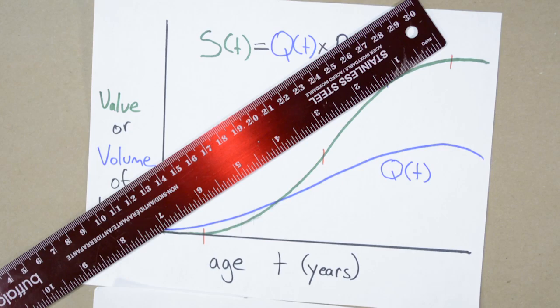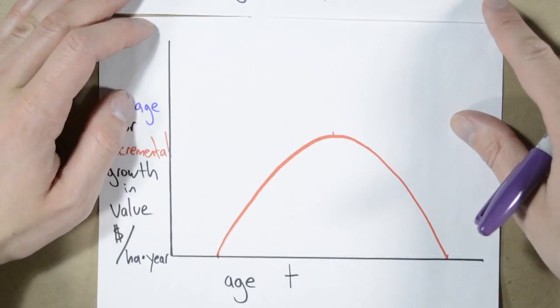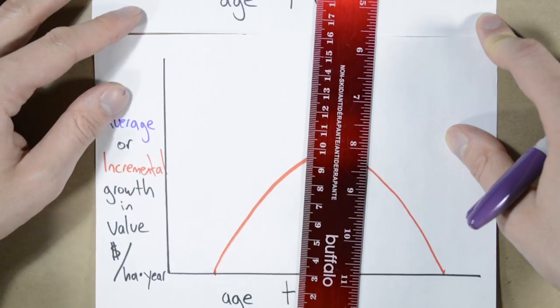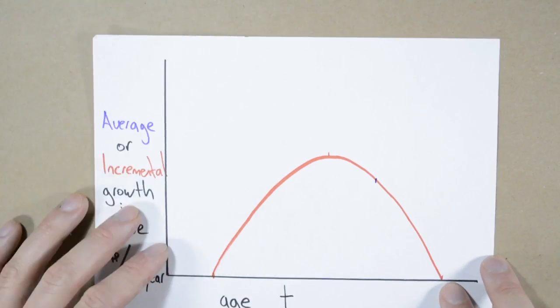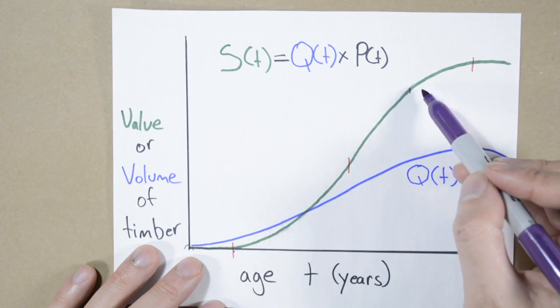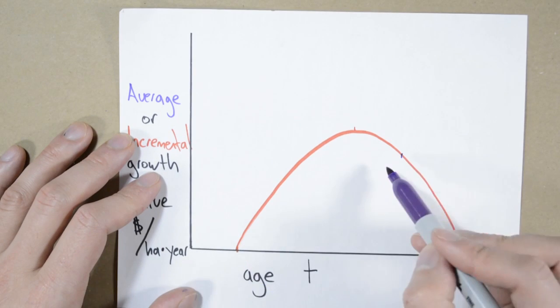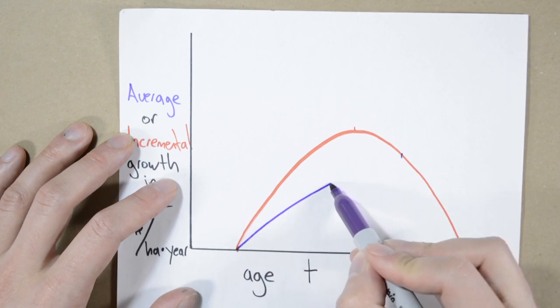So knowing that, we know that the average growth and the incremental growth are going to cross at the maximum sustainable revenue point. At the point where average growth is highest. So here. The average line is going to start where the stumpage starts and peak at the maximum sustainable revenue. And then it's just going to sort of decrease forever but never really get back to zero. So like this.